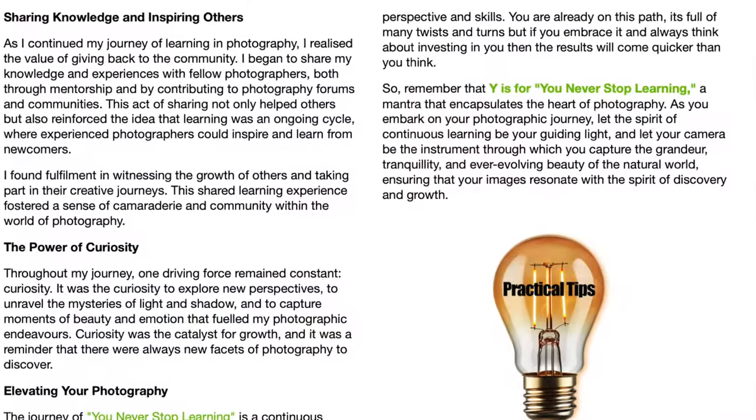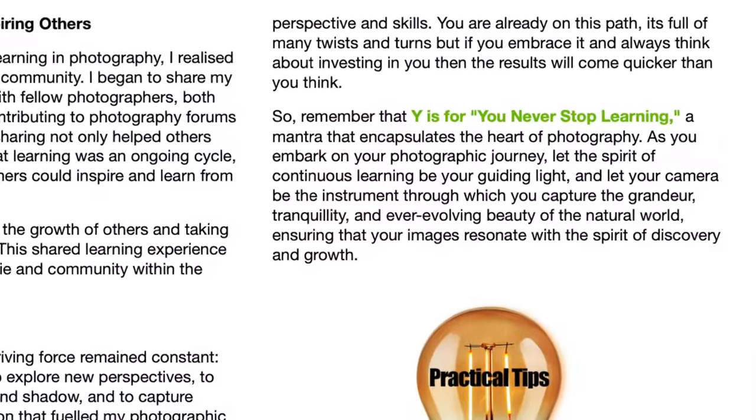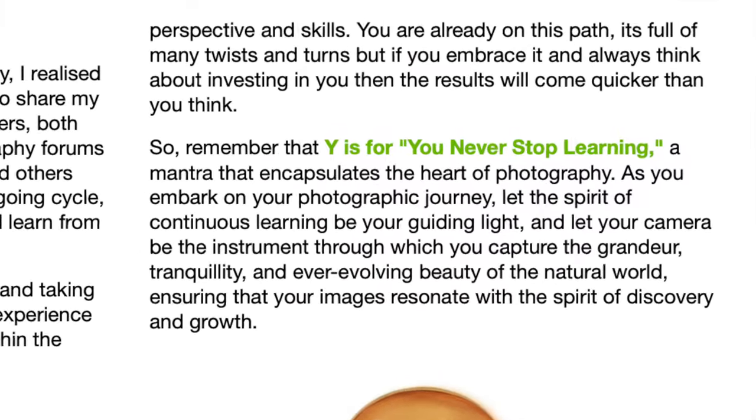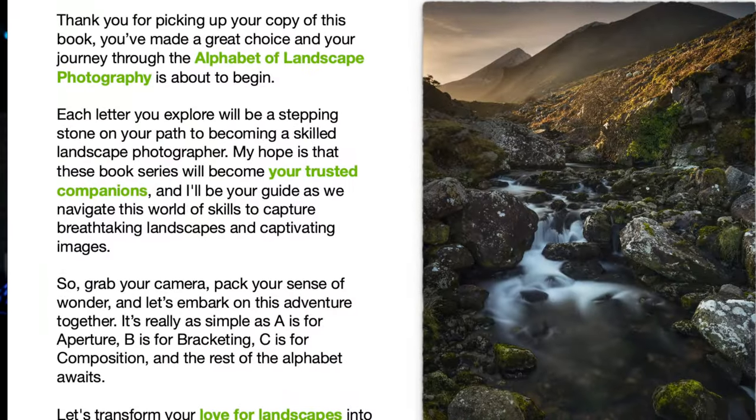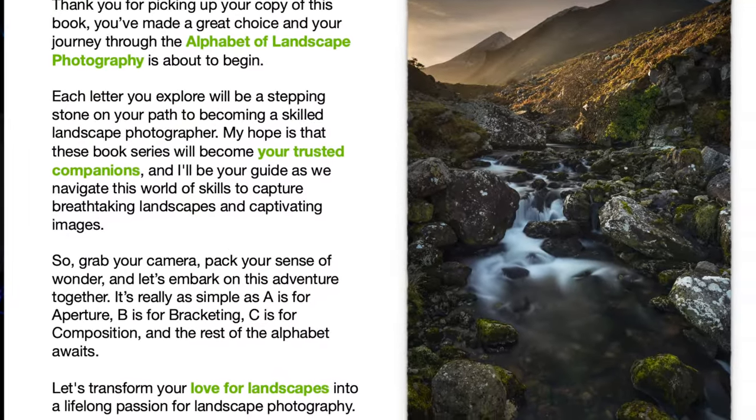In landscape photography, as in life, there's always room to improve, to grow, to experiment, and to push the boundaries of our creativity. I myself am still growing and learning every day, and I hope this book will help you to do the same. In the Alphabet of Landscape Photography Volume One, you'll find not just knowledge but a mindset — an invitation to embrace the joy of continuous discovery and learning, and to see each photograph as a chance to learn something new. Remember, it is okay to make mistakes; they are lessons, and we should embrace failure, because every time we fail we learn something, until one day it all falls together.